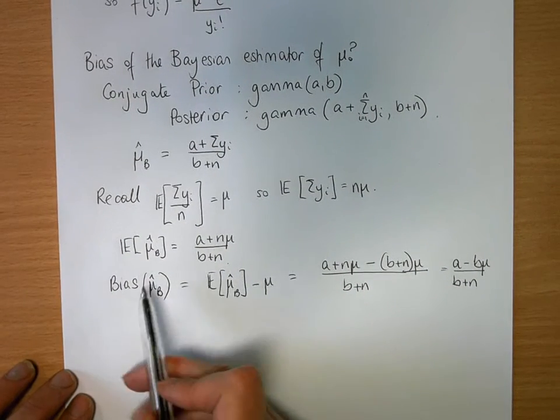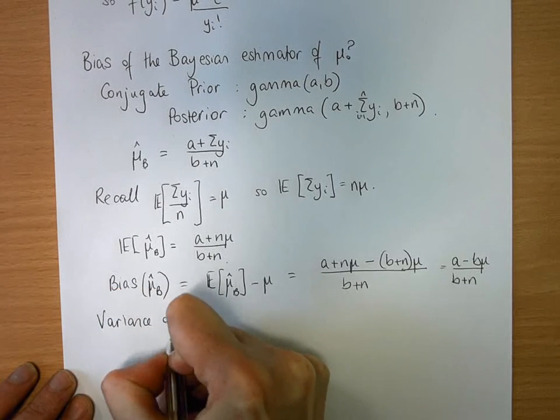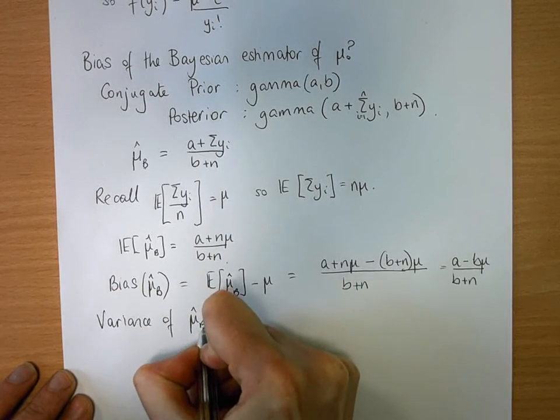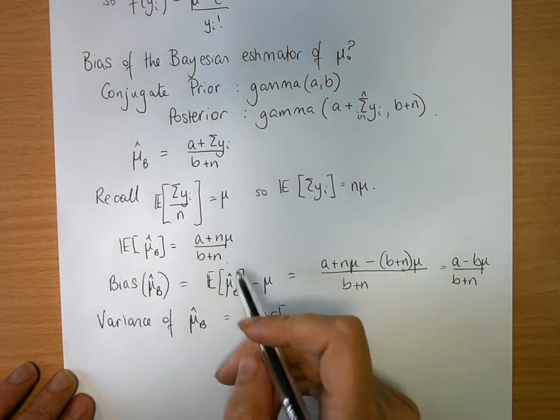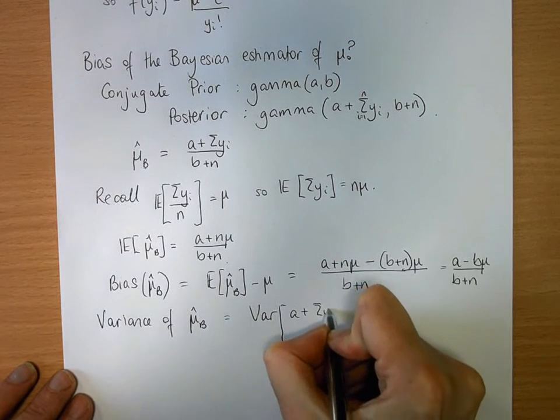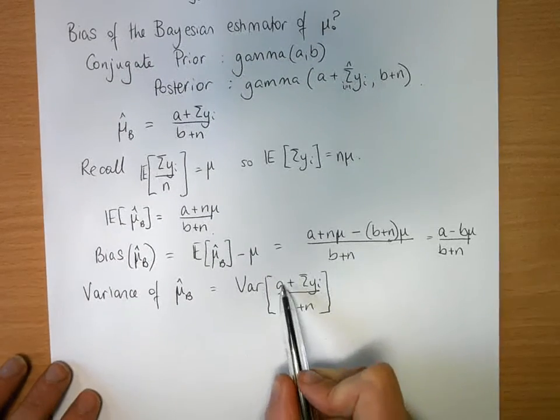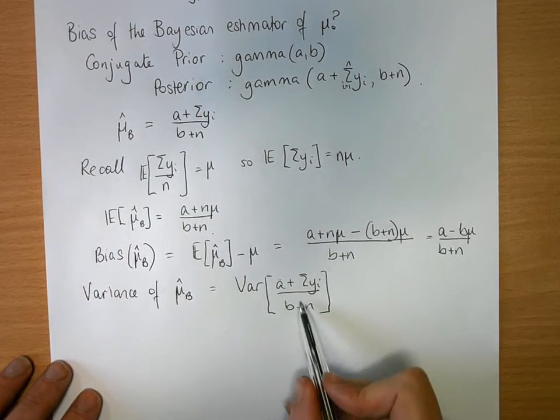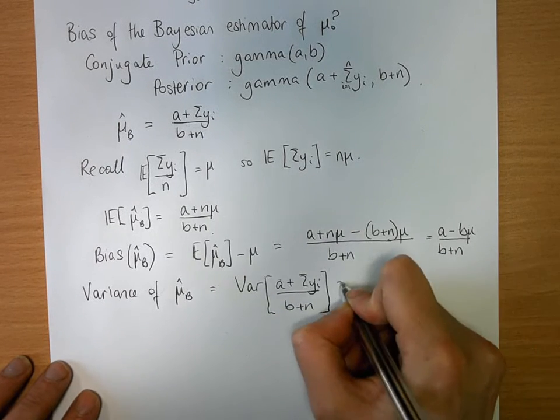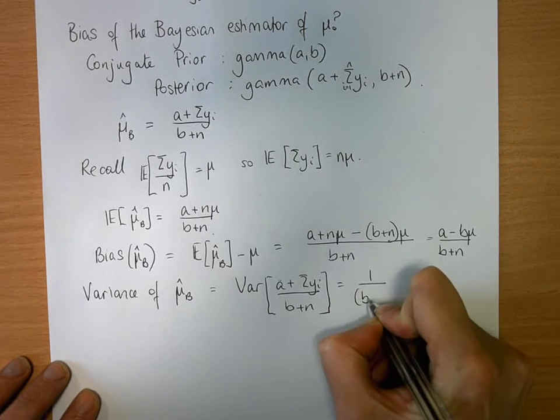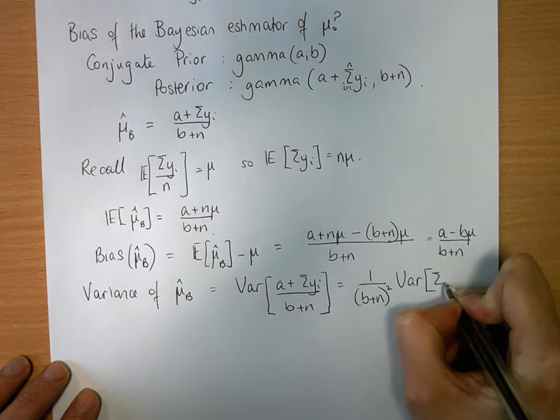So now we need to think about the variance of this estimator. Variance of mu hat b equals the variance of a plus the sum of yi over b plus n. We recall that a is just a constant, so the variance of that is going to go to zero. b plus n is a constant, so when we take this outside, it's going to be squared. So it's equal to 1 over b plus n squared times the variance of the sum of yi.